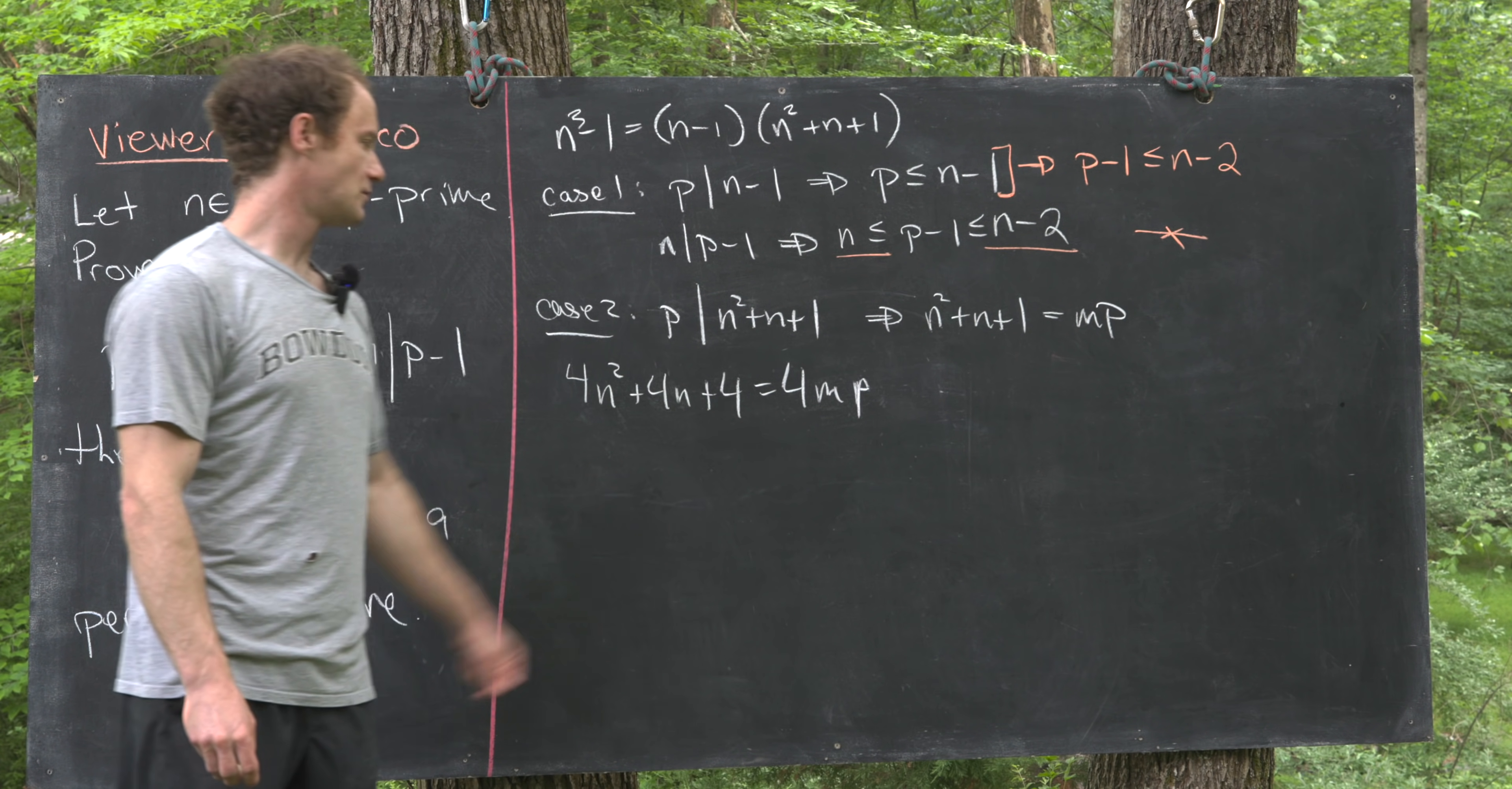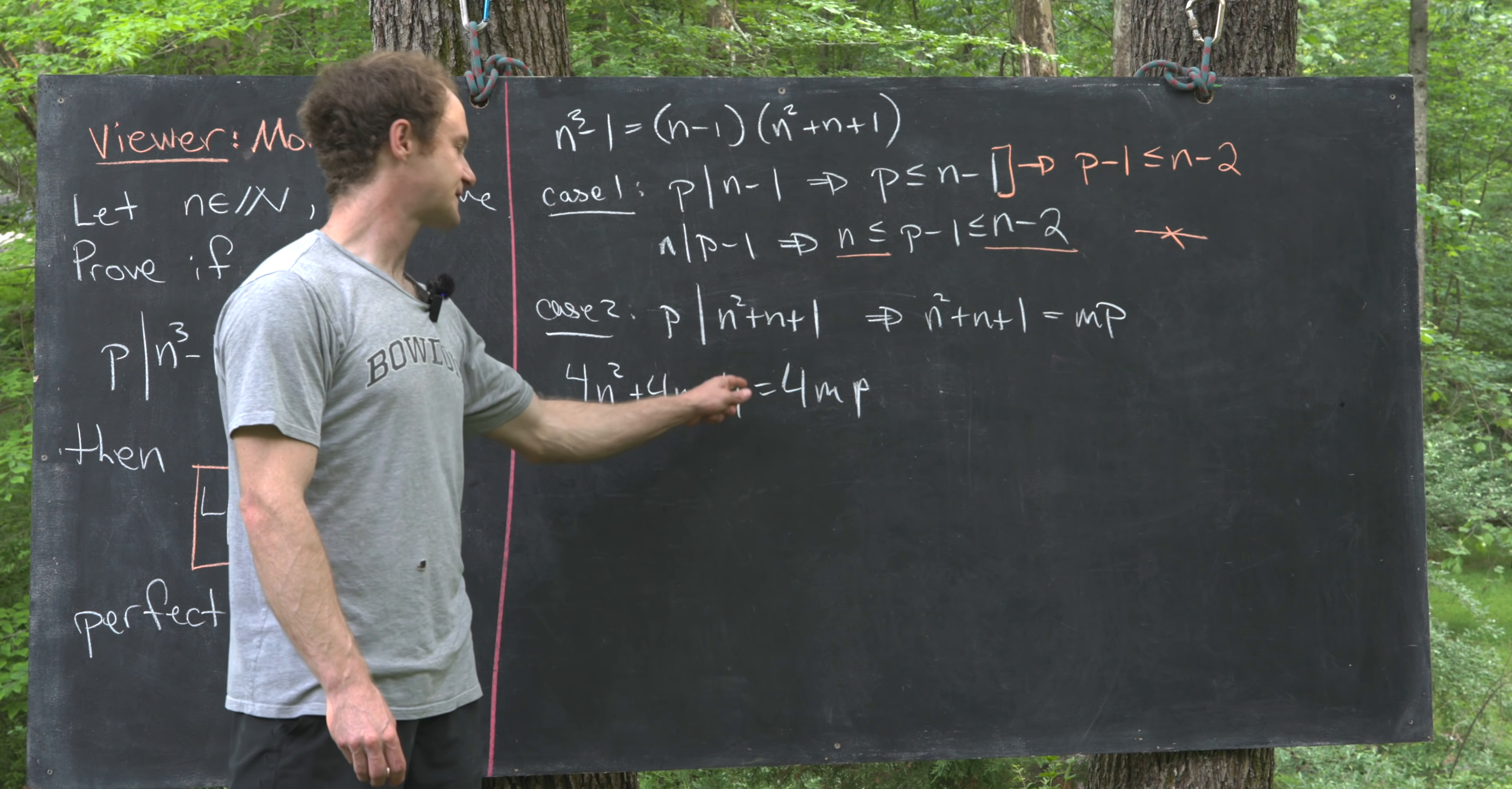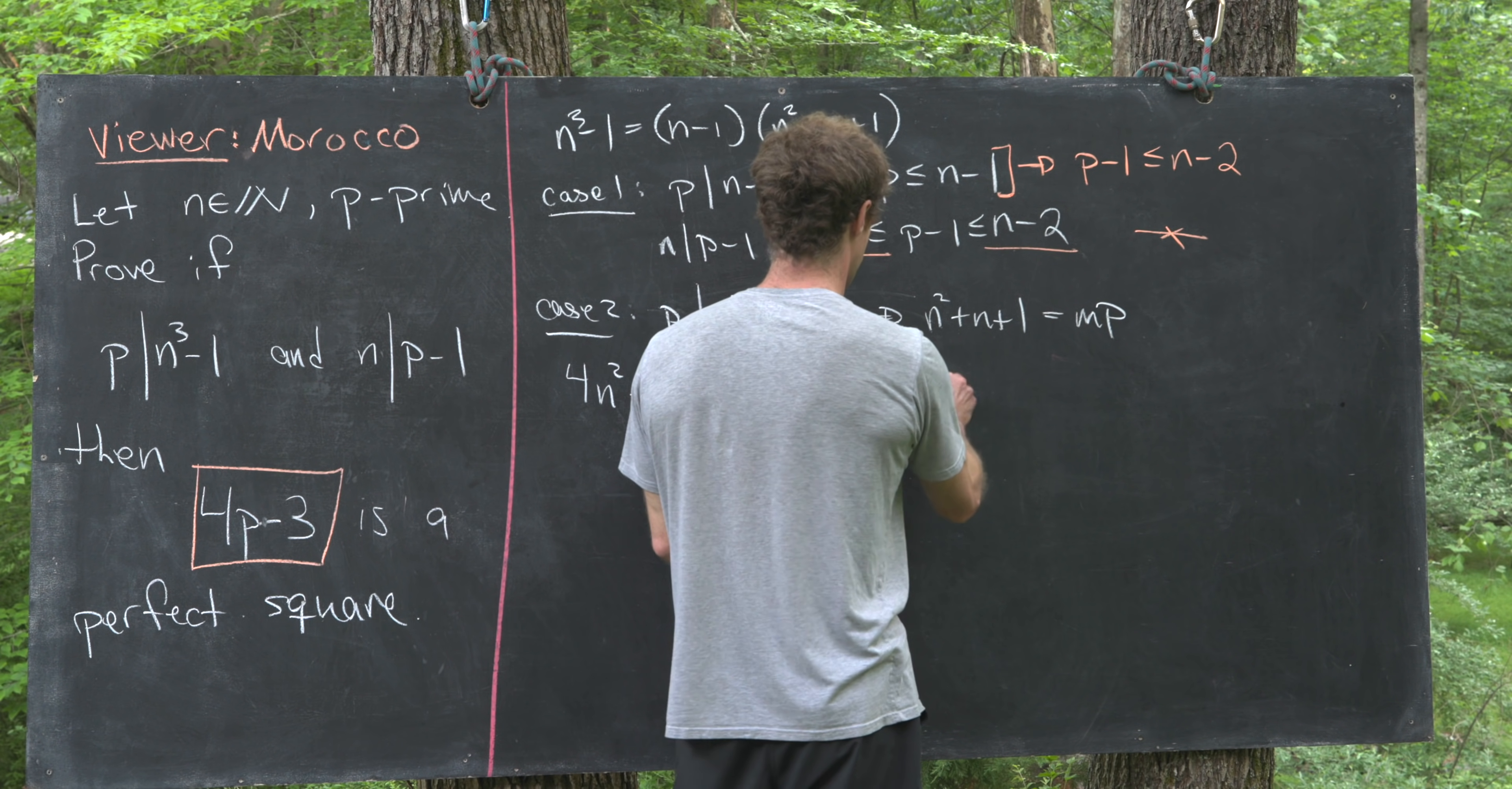But now this is almost a perfect square binomial over here on the left-hand side. We just have a +4 instead of a +1, so let's subtract 3 from both sides.